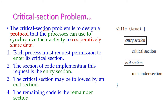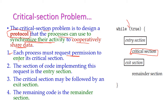The critical section problem is used to design a protocol, so that processes can use it to synchronize their activities to cooperatively access shared data. We have to identify the shared data for all the processors and allow them in a synchronized way to access it, otherwise a data inconsistency problem occurs. The first important point is that each process must request permission to enter the critical section. The code implementing this request is called the entry section.